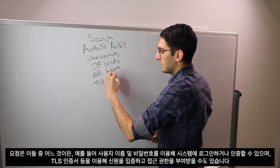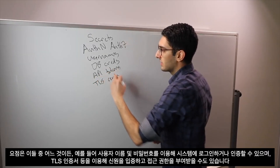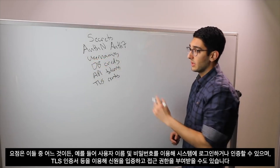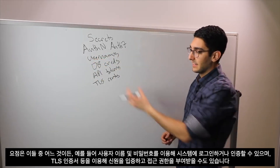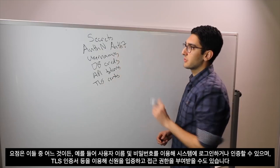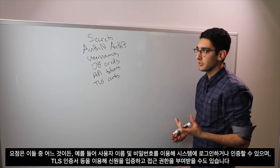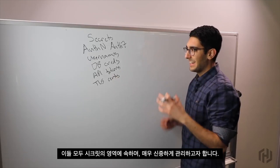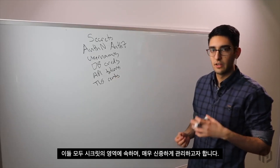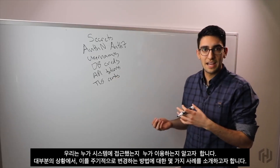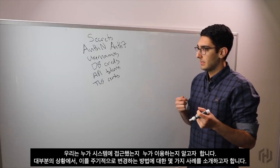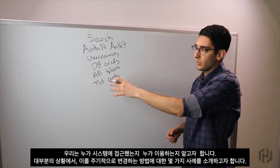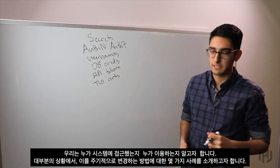Any of these things can be used to either log into a system and authenticate, such as a username and password, or to prove our identity, something like a TLS certificate, and so we use it to authorize access. All of these fall in the realm of secrets, and these are things we want to carefully manage. We want to understand who has access to them, who's been using them, and we want some story around how we can periodically rotate these.